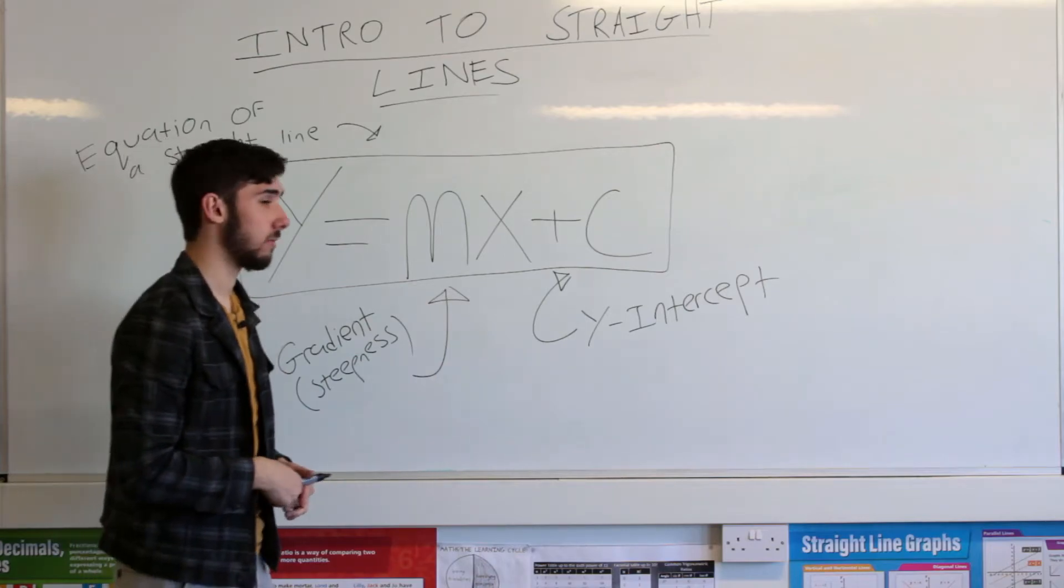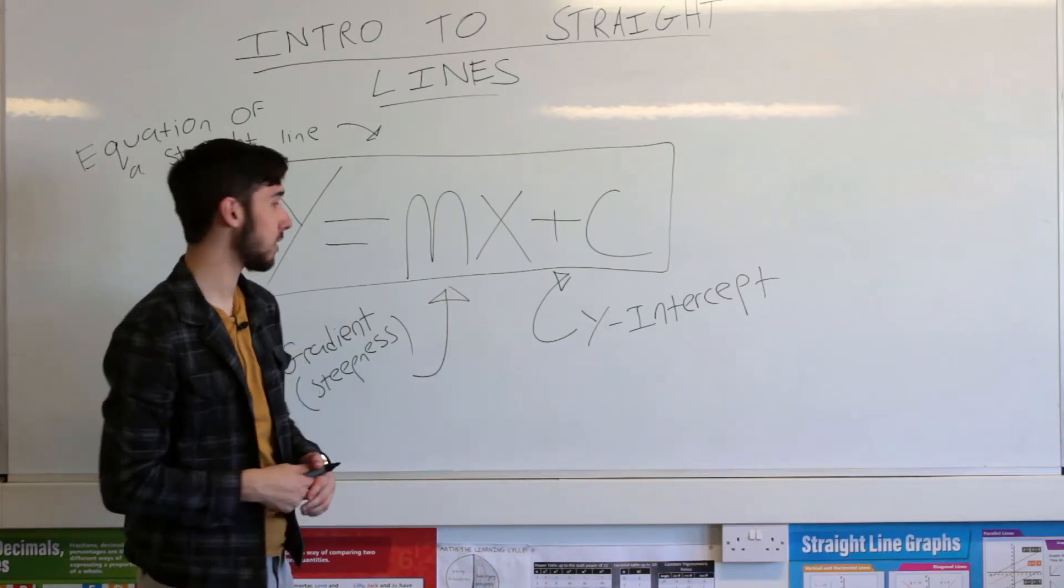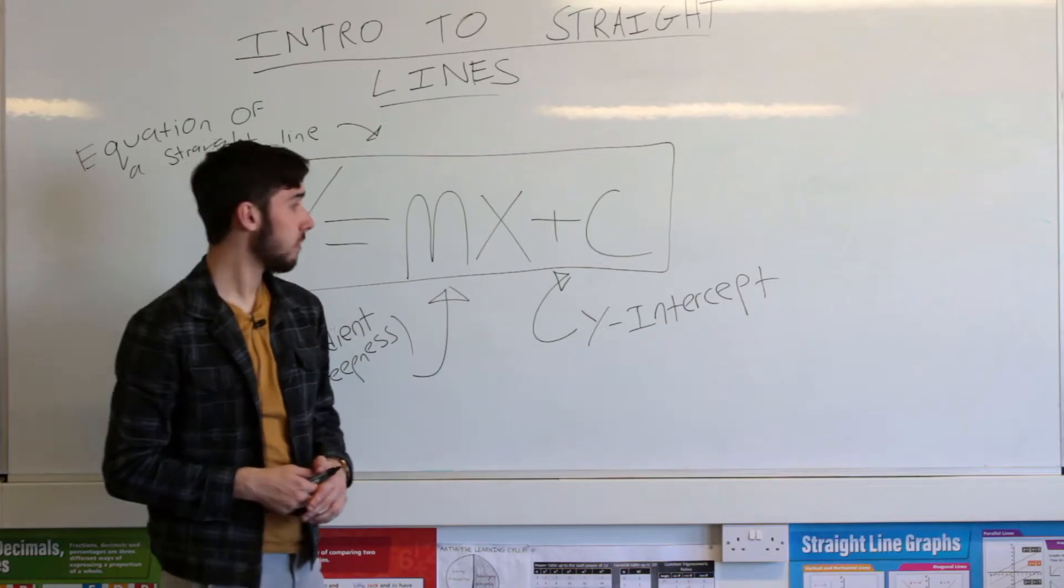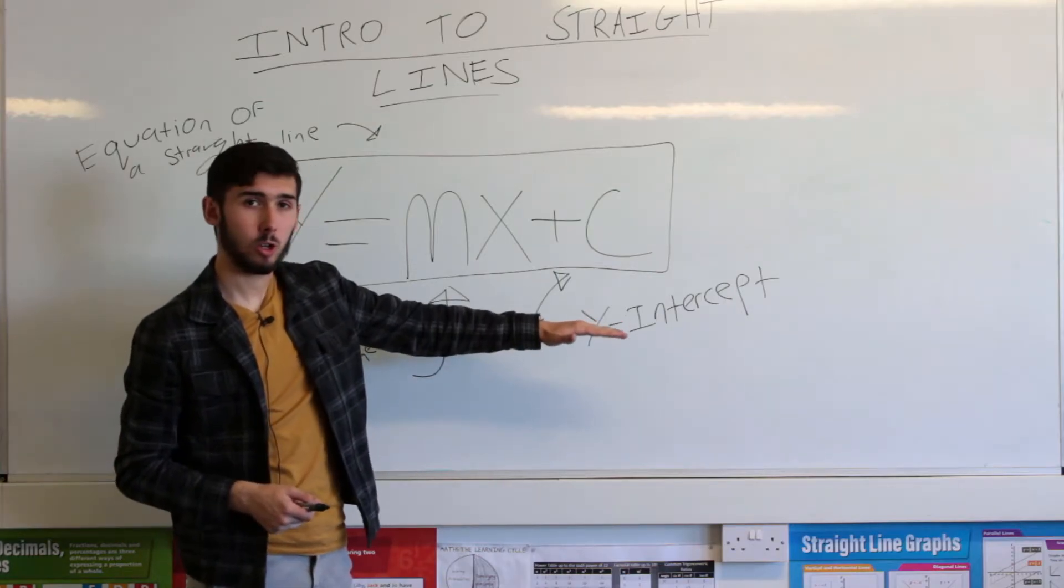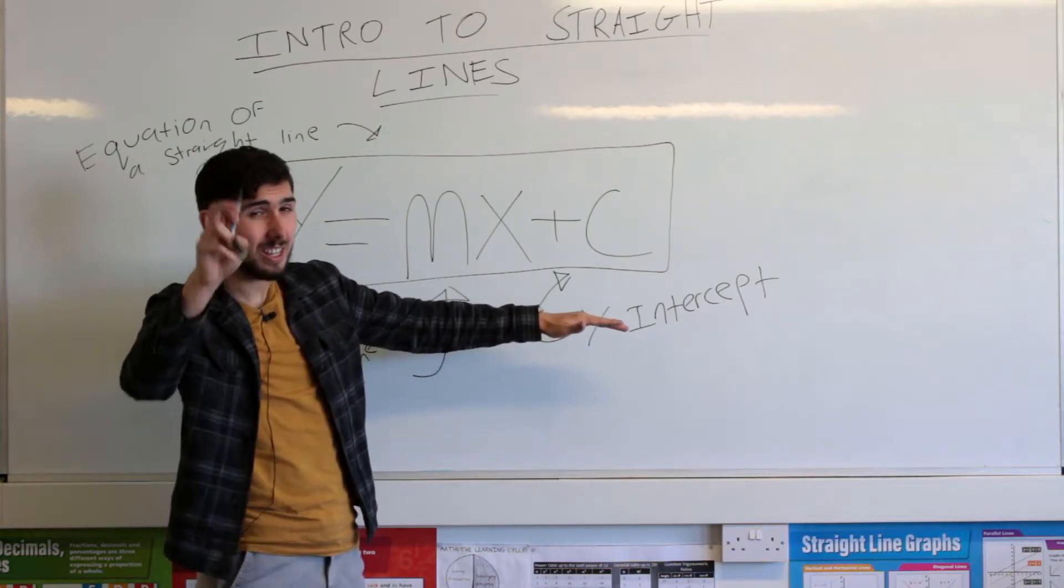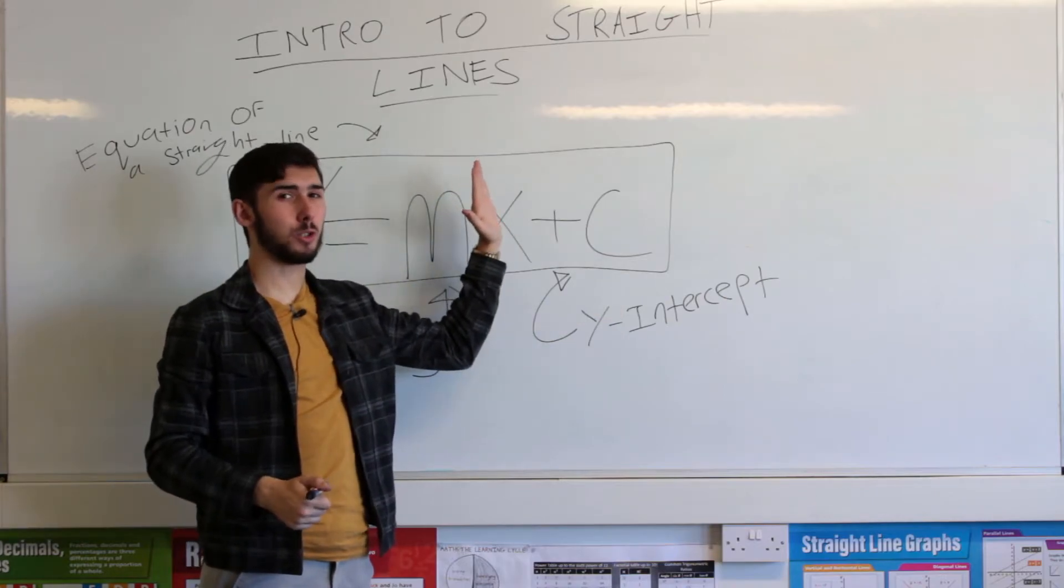A gradient of zero is like a flat line. A gradient of infinity is like a vertical line.